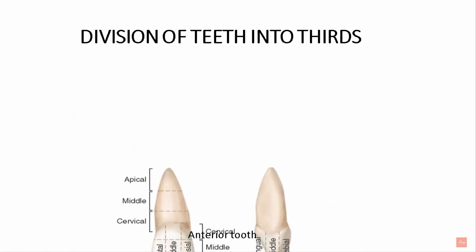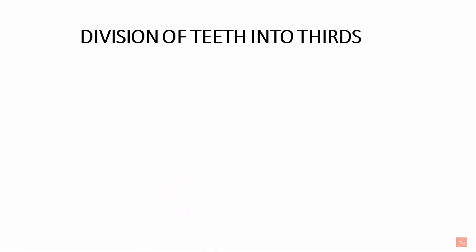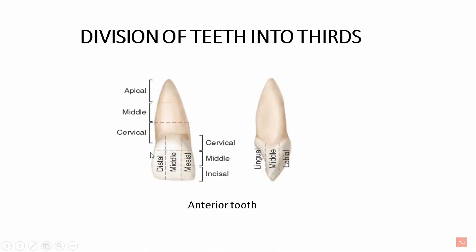Now let's see how the division of the teeth into thirds is done. For anterior teeth, the crown and root are separated by the cervical line. The crown is divided into the incisal third, middle third, and cervical third. The root is divided into the cervical third, middle third, and apical third. On the proximal surface, division gives the labial third towards the lip, the middle third, and the lingual third towards the tongue.